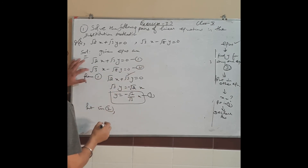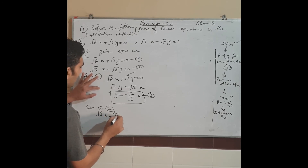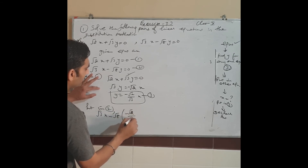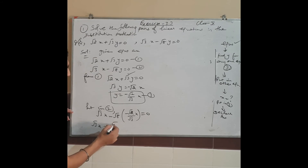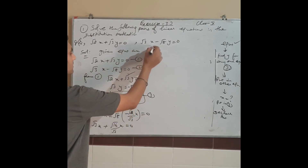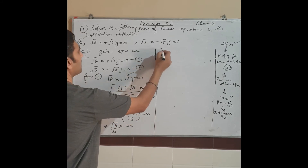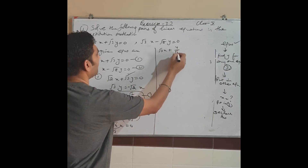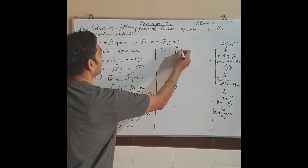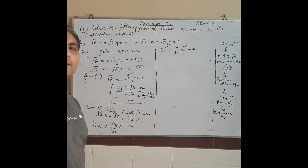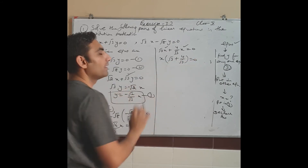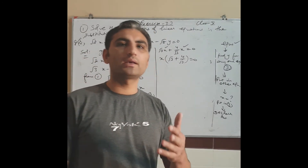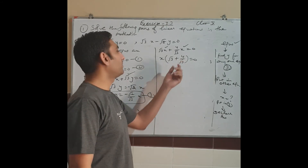Put this value of y into equation 2: √3·x − √8·[−(√2/√3)·x] = 0. This gives √3·x + √(8×2)/√3·x = 0, which is √3·x + √16/√3·x = 0. Since √16 = 4, we get √3·x + (4/√3)·x = 0. Factor out x: x·[√3 + 4/√3] = 0.